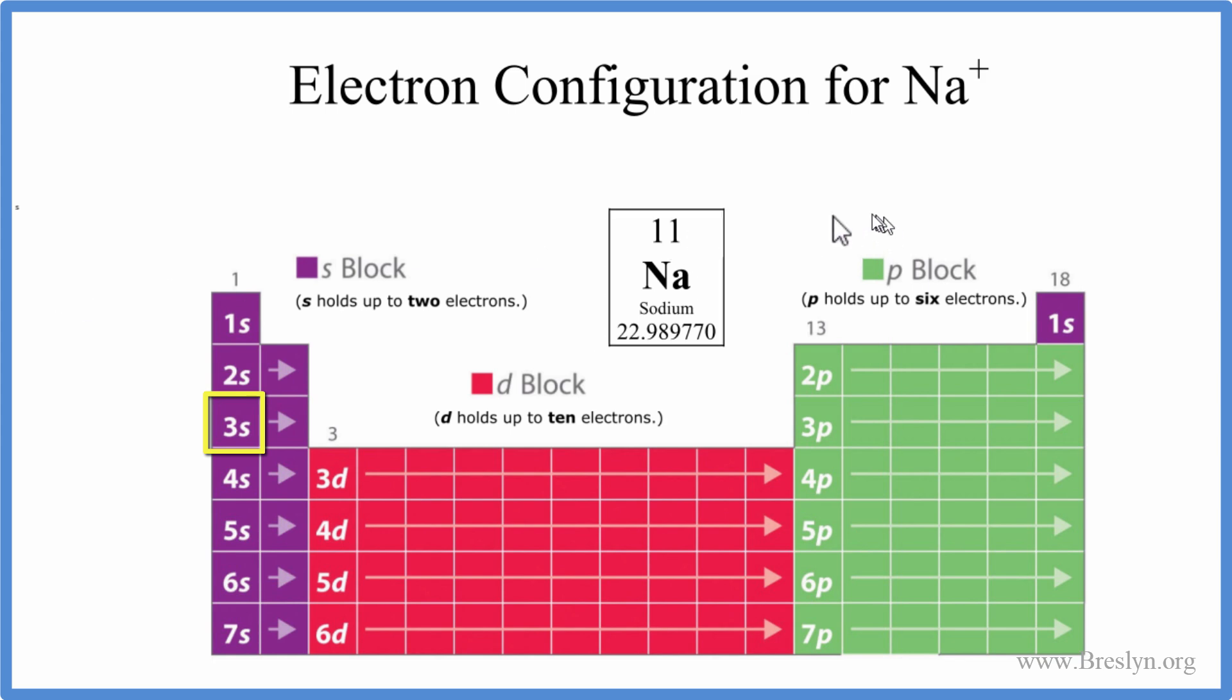We know that this is a neutral atom because it doesn't have a plus or minus. In fact, all the elements on the periodic table are neutral. Because of that, we know that the atomic number tells us the number of protons. Since it's neutral, protons equal electrons. We have 11 electrons here for the sodium atom.